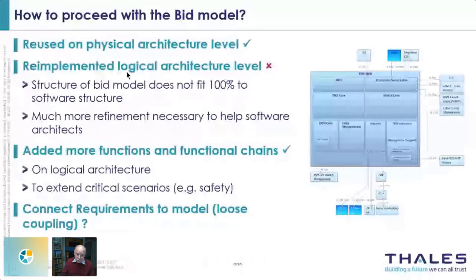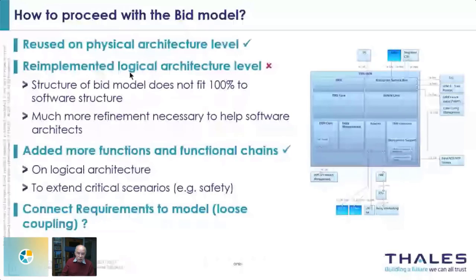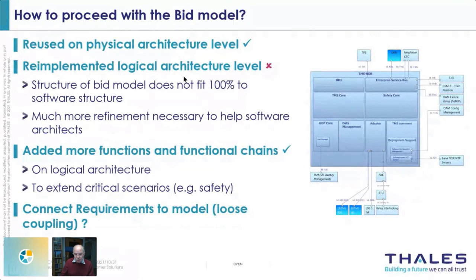The background was that the physical architecture — mainly the view of the hardware equipment — is defined mostly by the structure of locations provided by the customer, and there was no big change between bid and project, so it was easy to reuse the existing physical architecture. But the logical architecture was re-implemented in Capella. We learned from other projects that it is much easier for software architects — who are also stakeholders in the real-life project — to read the models if the logical architecture is quite similar to the structure they will have in their software architecture.